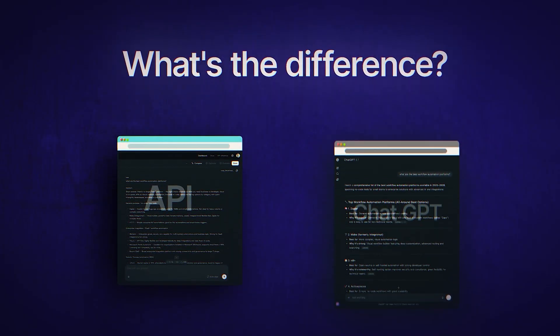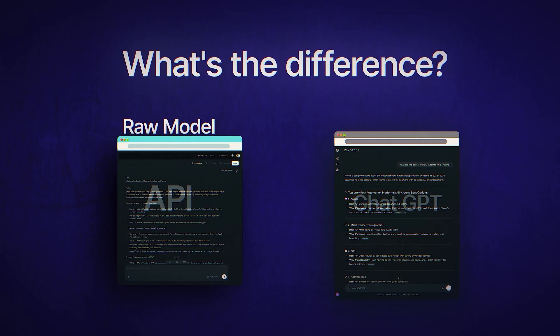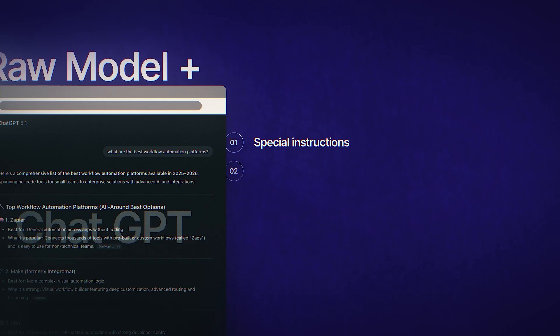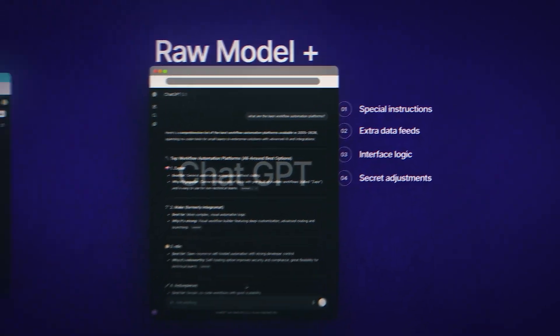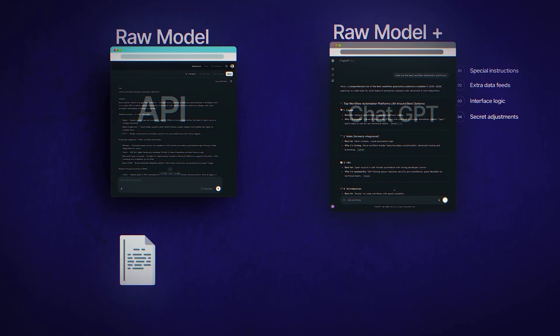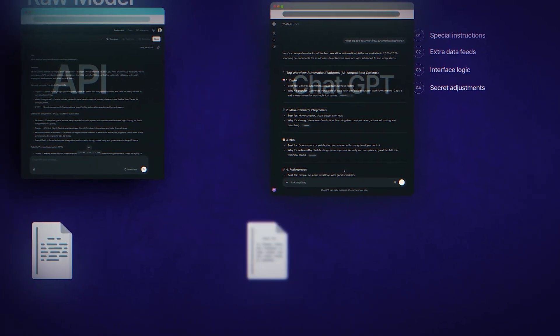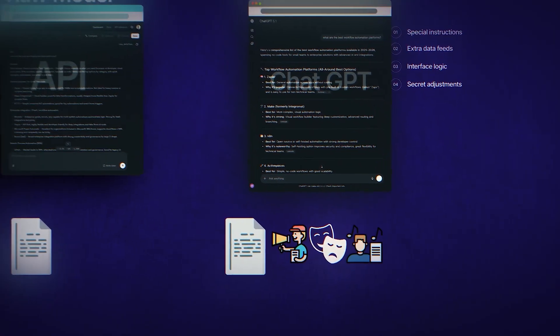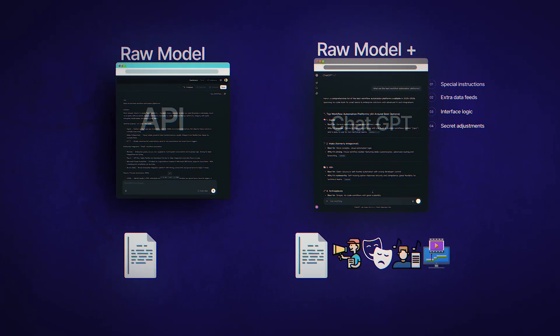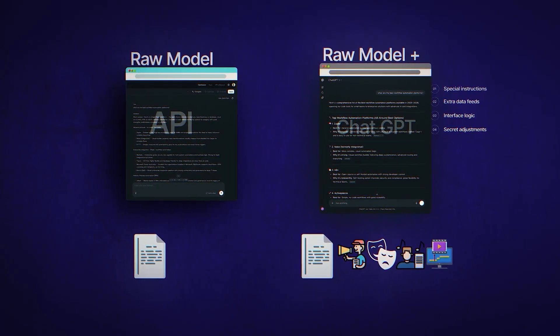So what's the difference? You can think of the API as the raw model — it's the engine. ChatGPT, on the other hand, is the raw model plus a whole lot of extras layered on top: special instructions called system prompts, extra data feeds, interface logic, and likely some small secret adjustments that only OpenAI knows about. The API is like a screenplay — it's got all the makings of a great movie, but ChatGPT is like a finished film with the director's choices, the actor's delivery, the musical score, and the editing.